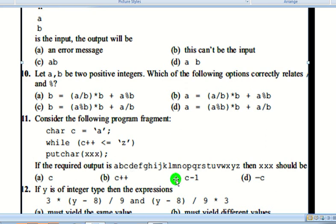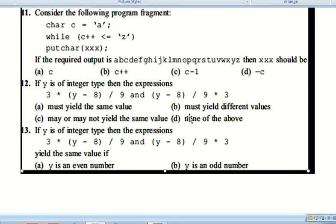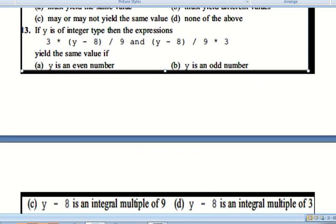Question number thirteen: If y is of integer type, then the expressions 3 * (y - 8) / 9 and (y - 8) / 9 * 3 may or may not yield the same value. Option C is correct. They yield the same value when y minus 8 is an integral multiple of nine.